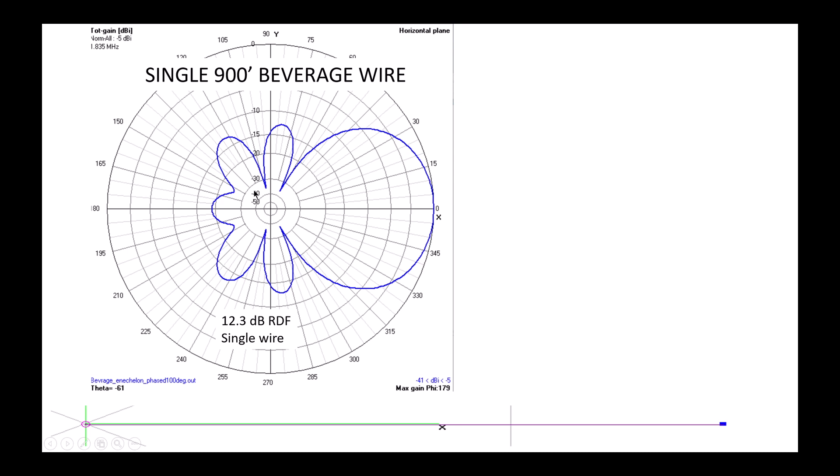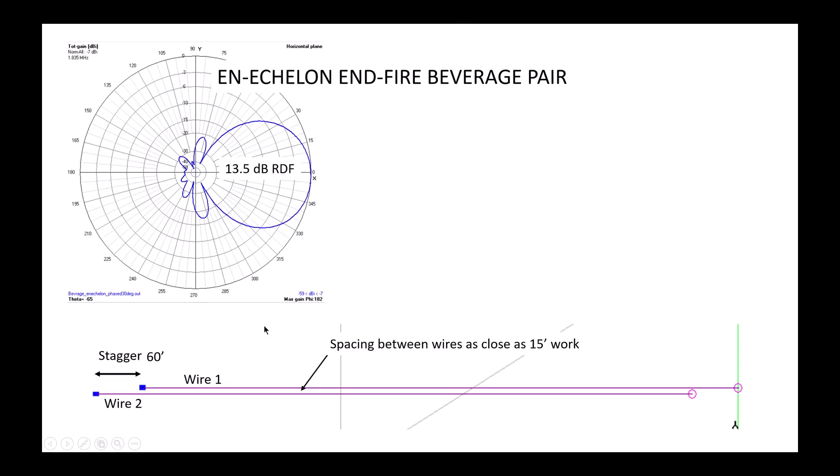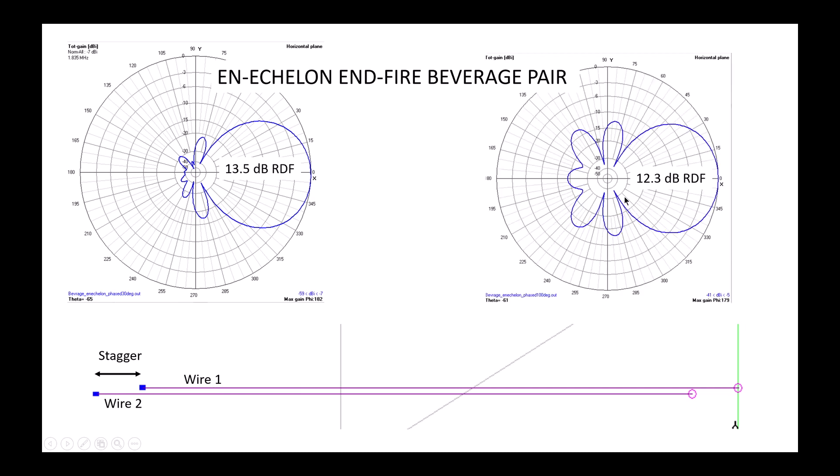So the benefit of this, of course, is we take a single beverage wire which already has a forward pattern and its own RDF, and we're going to enhance that by putting them what we call on echelon or end fire. We call them on echelon with the stagger. So now what we've done is we've enhanced what was a 12 dB RDF antenna to a 13 dB RDF array with these two antennas staggered on echelon. The real benefit though is not as much the RDF as this greatly enhanced rearward rejection, really enhanced front to back or front to rear. Really helpful antenna if you're looking at maximizing your rearward rejection from QRM or other types of noise.